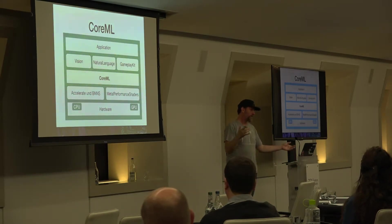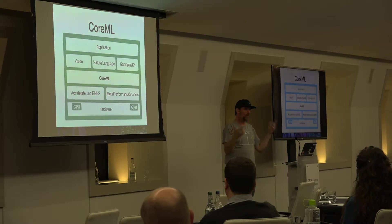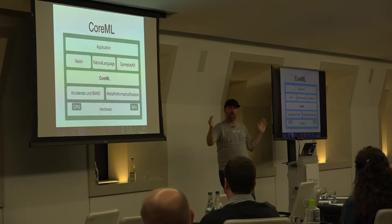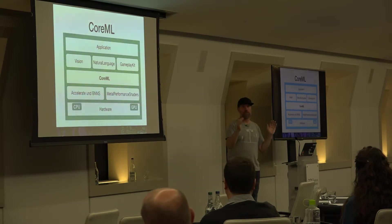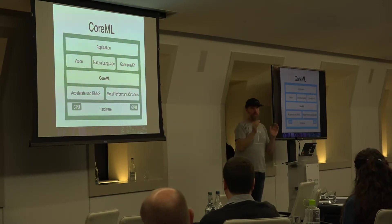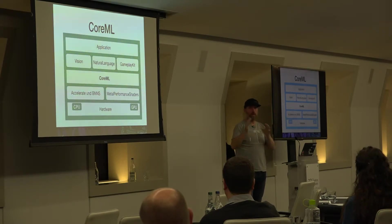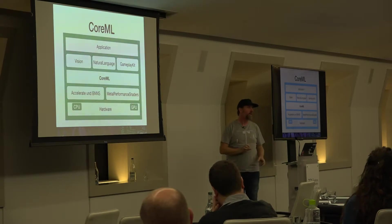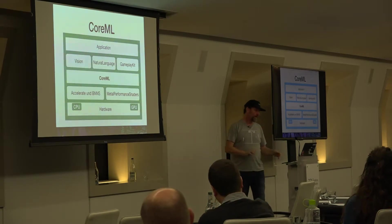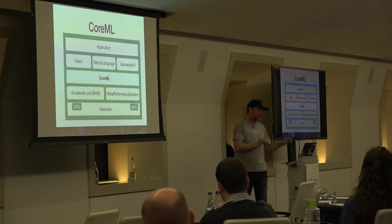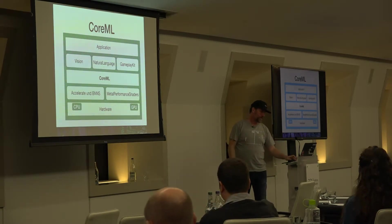Apple came up with new mobile phones, but the range of devices is very small compared to Android. So they know their hardware and know how to make it faster.